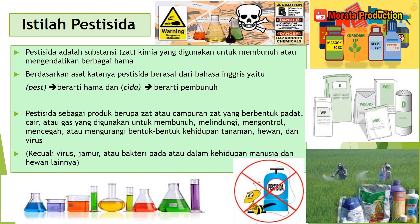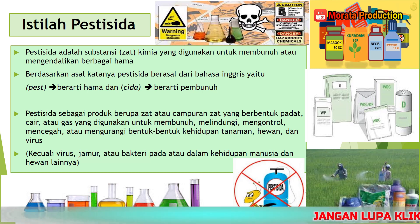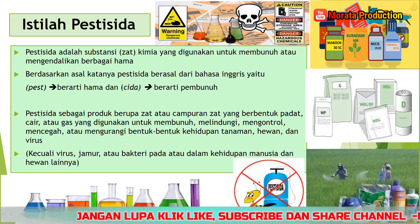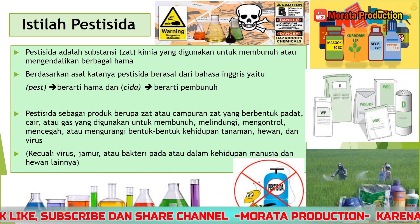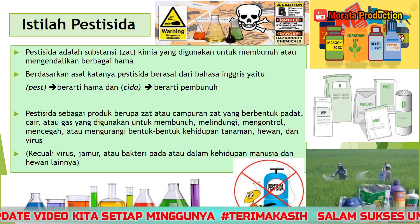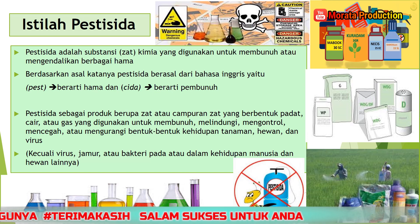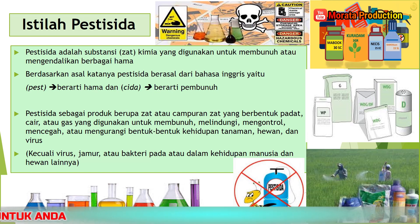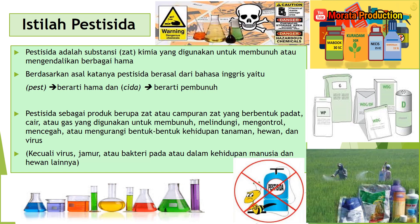Pestisida adalah substansi atau zat kimia yang digunakan untuk membunuh atau mengendalikan berbagai hama. Berdasarkan asal katanya, pestisida berasal dari bahasa Inggris yaitu PEST berarti hama dan CIDE berarti pembunuh. Di samping ada contoh gambar, bahaya dari pesticida, dan juga contoh kode-kode pesticida pada kemasan dan petani yang mengaplikasikannya di persawahan.